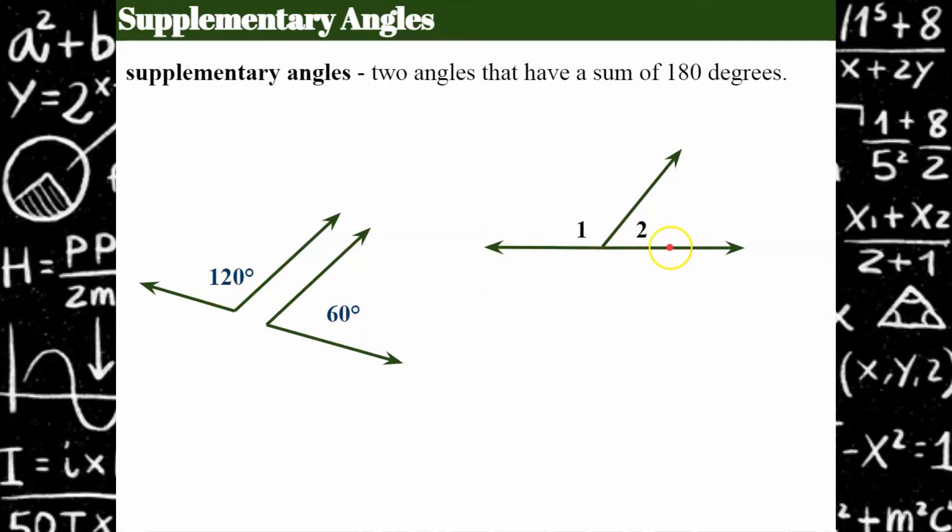You could also see a pair of angles that are adjacent like this with a ray between them. And we know because this is a straight line that it's a straight angle and together they're supplementary and have a sum of 180 degrees.